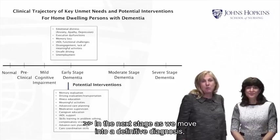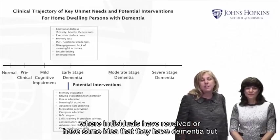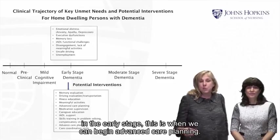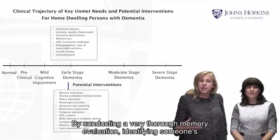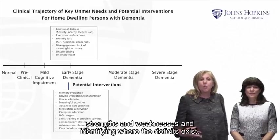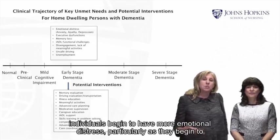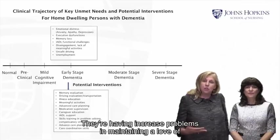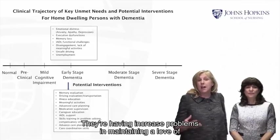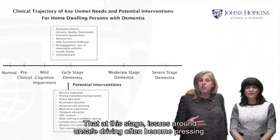As we move into a definitive diagnosis — where individuals have received or have some idea they have dementia — the early stage is when we can begin advanced care planning by conducting a thorough memory evaluation, identifying strengths and weaknesses, and identifying where deficits exist. At this stage, individuals begin to have more emotional distress, particularly as they understand they have a progressive and irreversible disease. They have increased problems maintaining engagement in activities and sustaining attention in meaningful activities. Issues around unsafe driving often become pressing, and they're often unable to continue working due to continued memory loss.